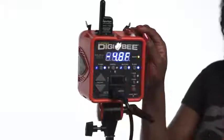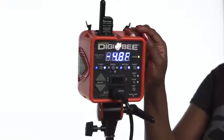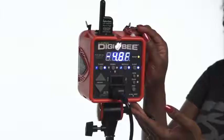This is the test fire button. When you press this button, it will test fire your Digibee. The Digibee also has a 1/8 inch sync jack located on the bottom of the unit, so you can use the 15-foot sync cord that comes with the light to attach the Digibee directly to your camera.